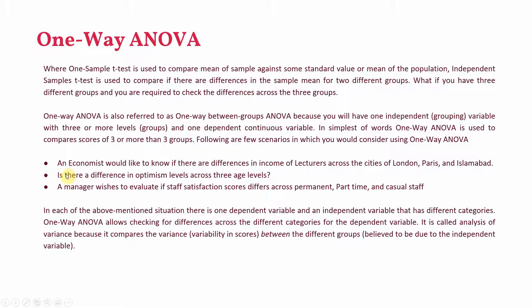Another example: is there a difference in optimism levels across three or four age levels? Here, optimism score is your dependent variable compared across those age levels. Another example: a manager wishes to evaluate staff satisfaction — the dependent variable — and assess whether it differs across permanent, part-time, and casual staff.